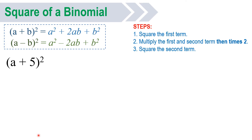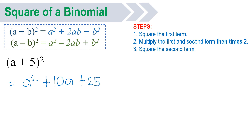Let us try this with our example: (a + 5) squared. Following the three steps — first, square the first term: a times a gives a squared. Second, multiply the first and second terms: a times 5 is 5a, then times 2 gives positive 10a, because 5 times 2 is 10, and we copy the variable a. Third, square the second term: 5 times 5 gives positive 25. That's your answer. You can actually solve it mentally — just keep practicing these three steps.